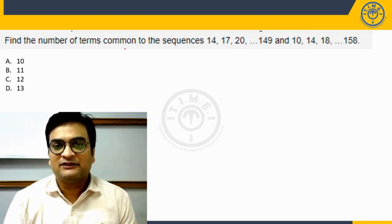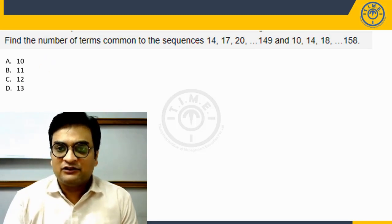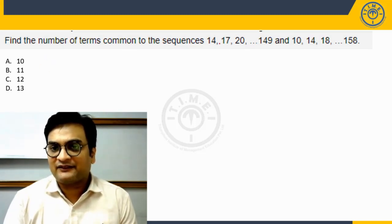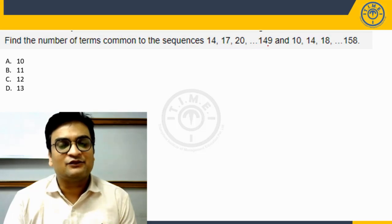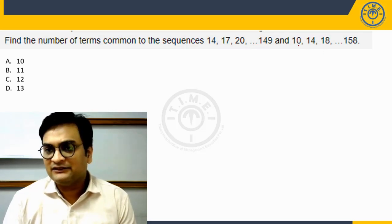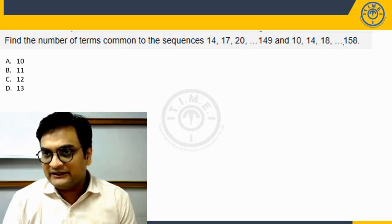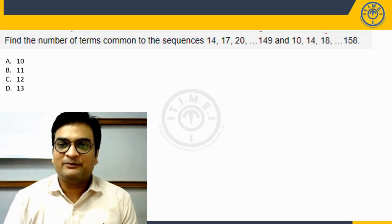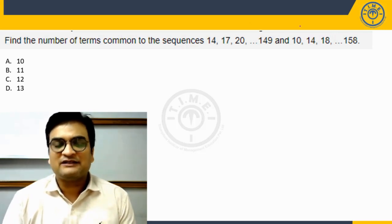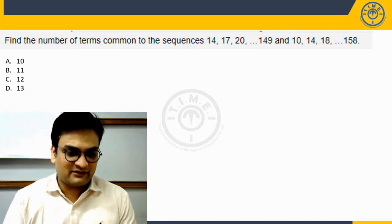The question says: find the number of terms common to the sequences 14, 17, 20 so on till 149, and 10, 14, 18 so on till 158. So, how many terms will be common to these two sequences is the question.